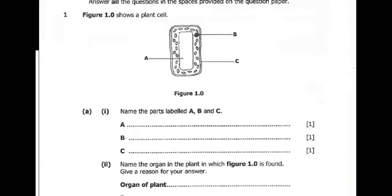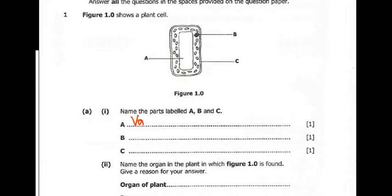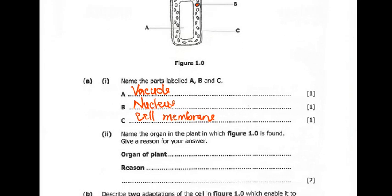We have question 1, which says figure 1.0 shows a plant cell. We have our figure here, which is labeled A, B, and C. Question 1A says name the parts labeled A, B, and C. So A is the vacuole — it's quite clear. B is the darker thing here — that's the nucleus. And then C is the cell membrane. Notice for C that it's the inner line which has been pointed. So if they pointed at the line outside, that's the cell wall. So just take note of what is being pointed at exactly.